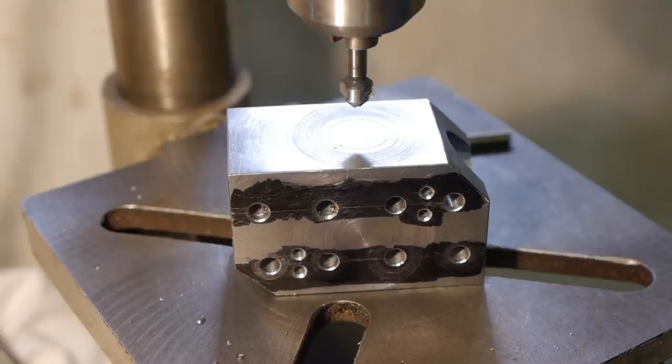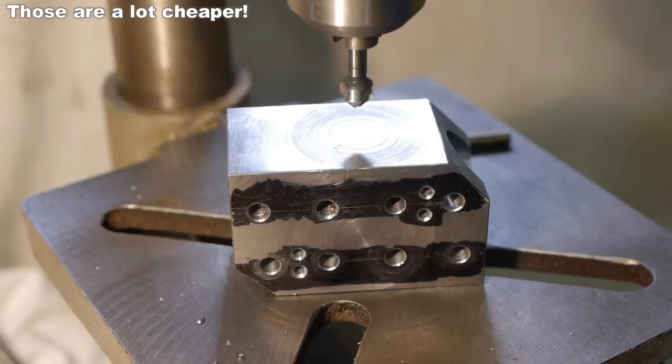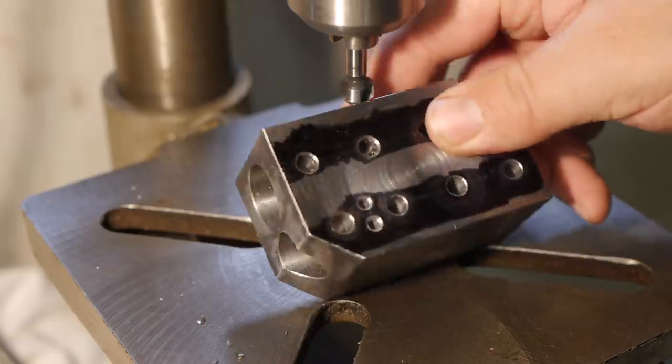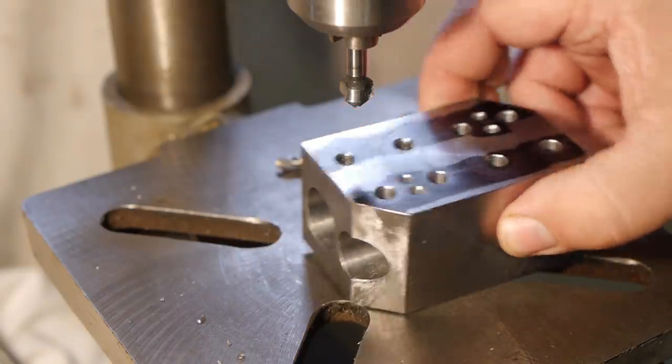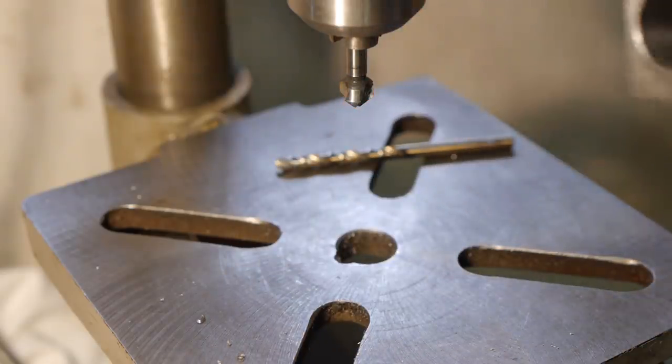And by the way, that 3.3 millimeter drill bit was a M35 high-speed steel cobalt drill bit also from Banggood. Later I'll try another drill bit, but first I want to finish this boring bar holder.